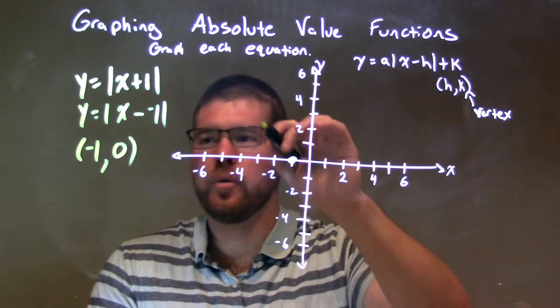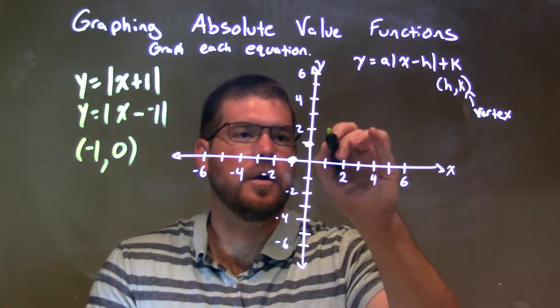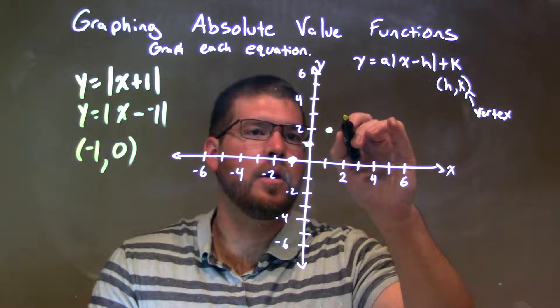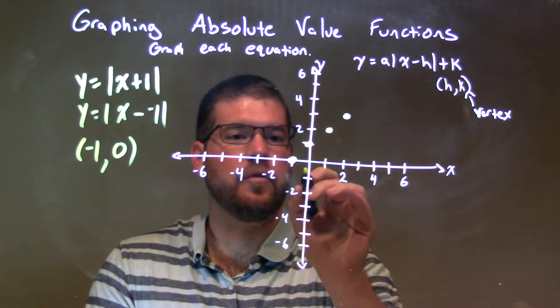With a slope of 1, we go up 1 over 1, up 1 over 1, up 1 over 1. That's our vertex. I'm going to fit it in here.